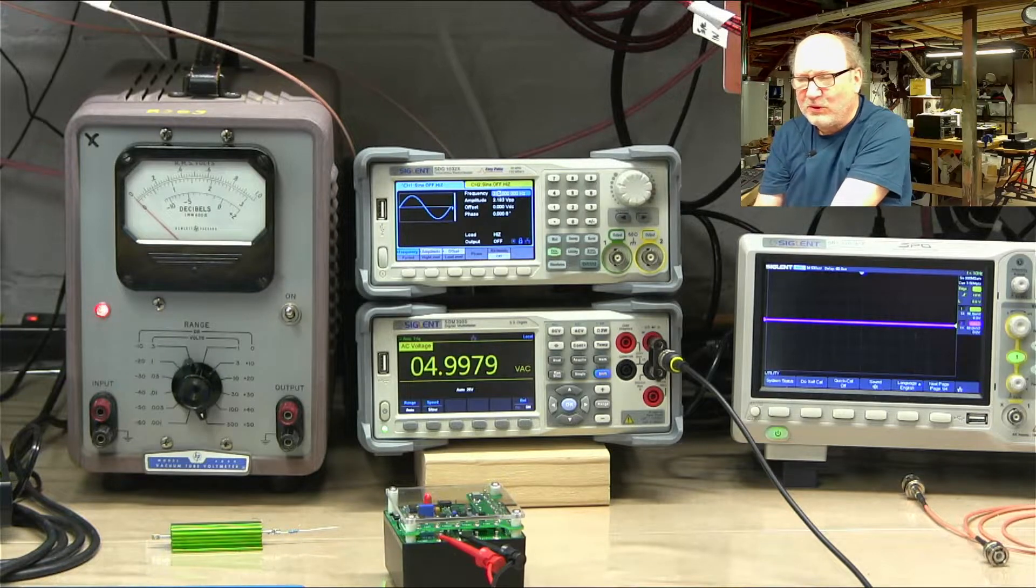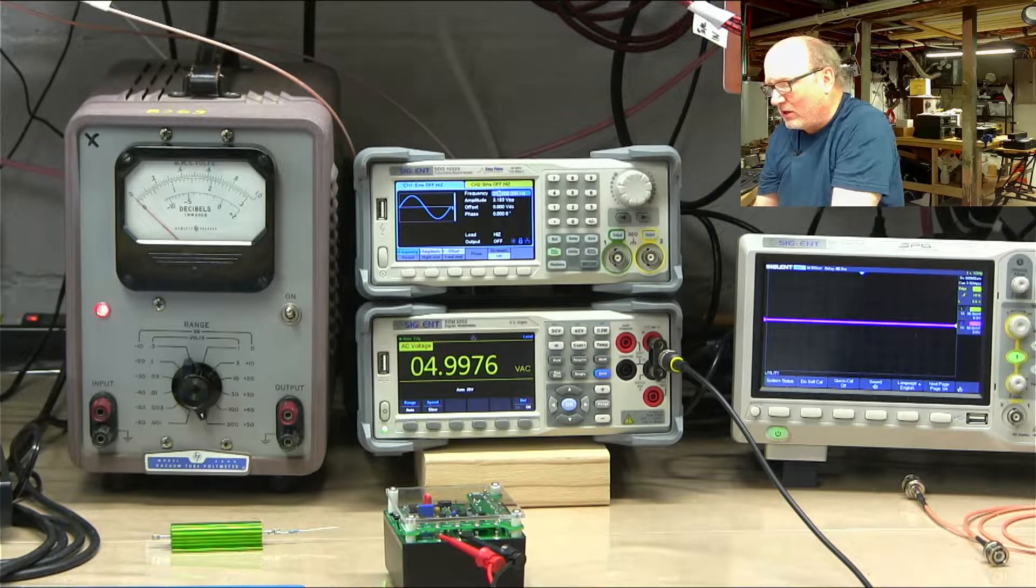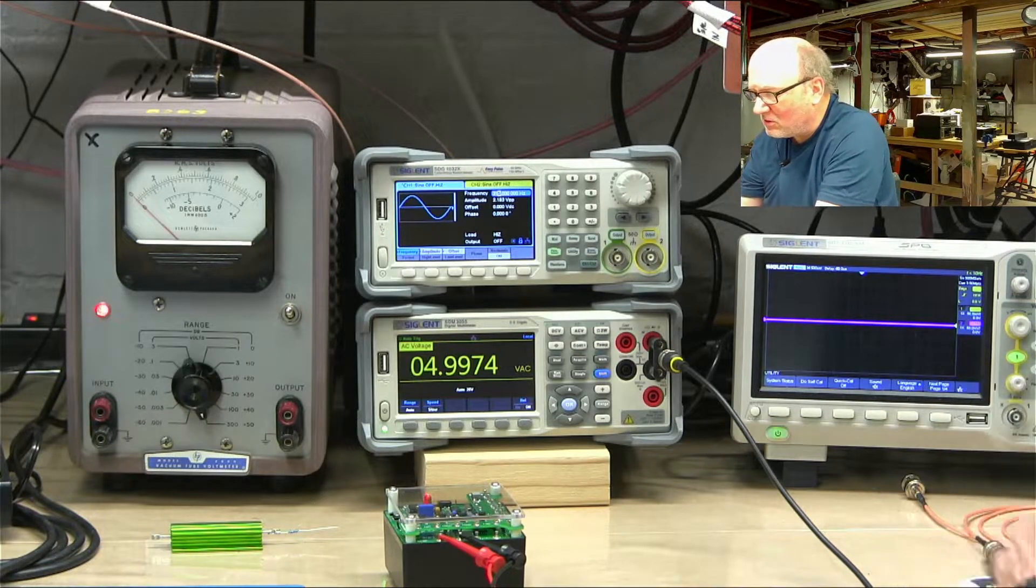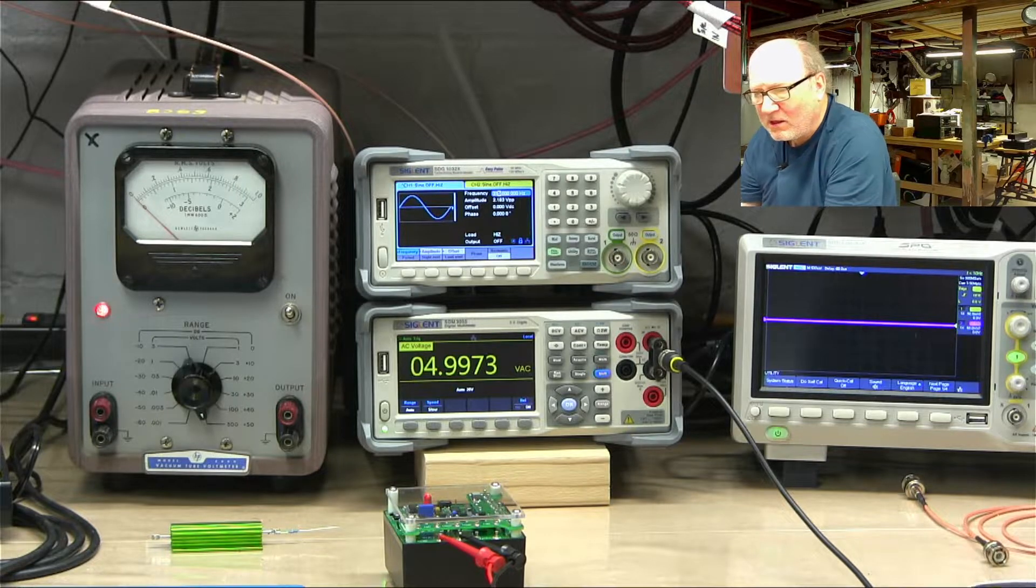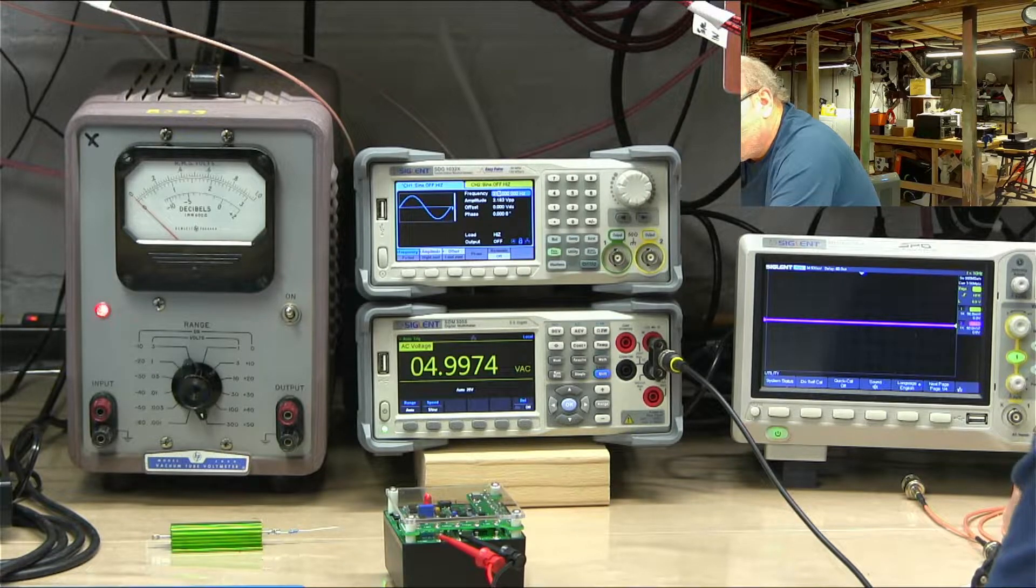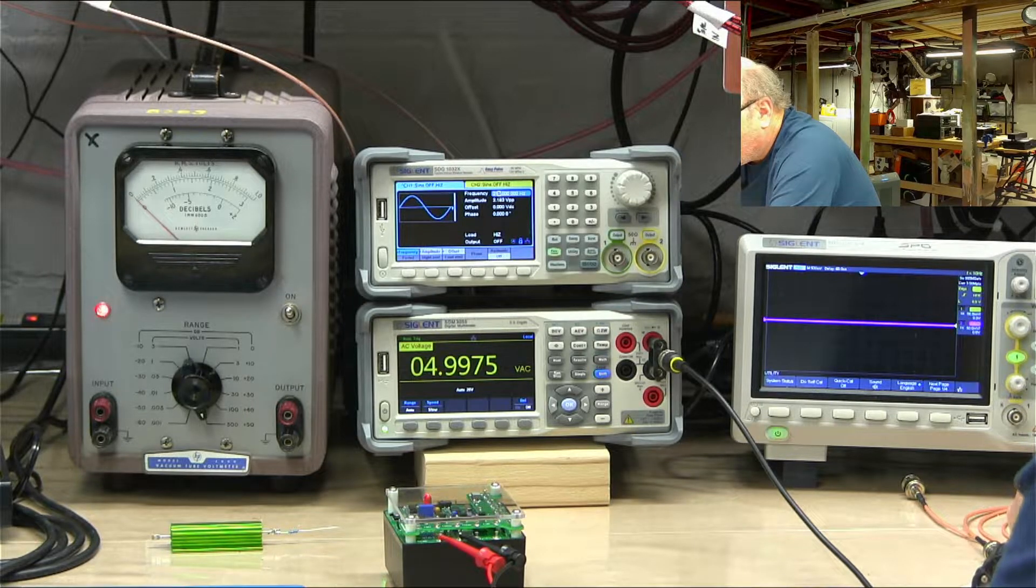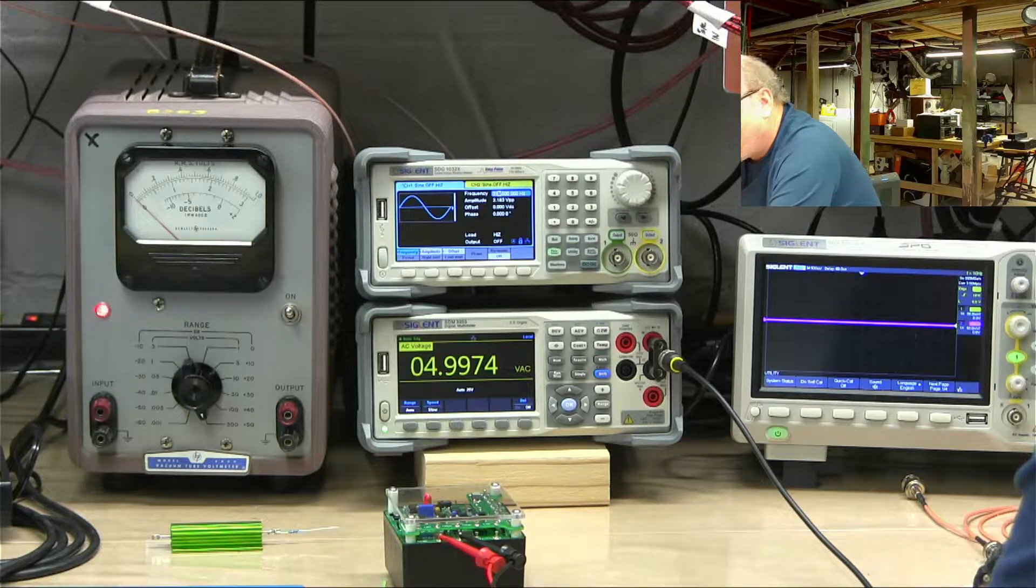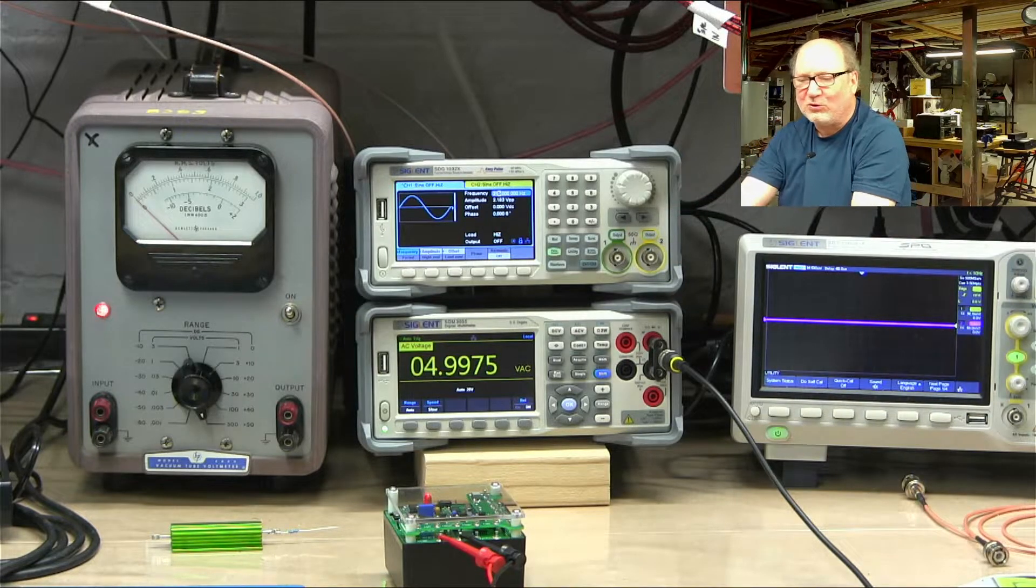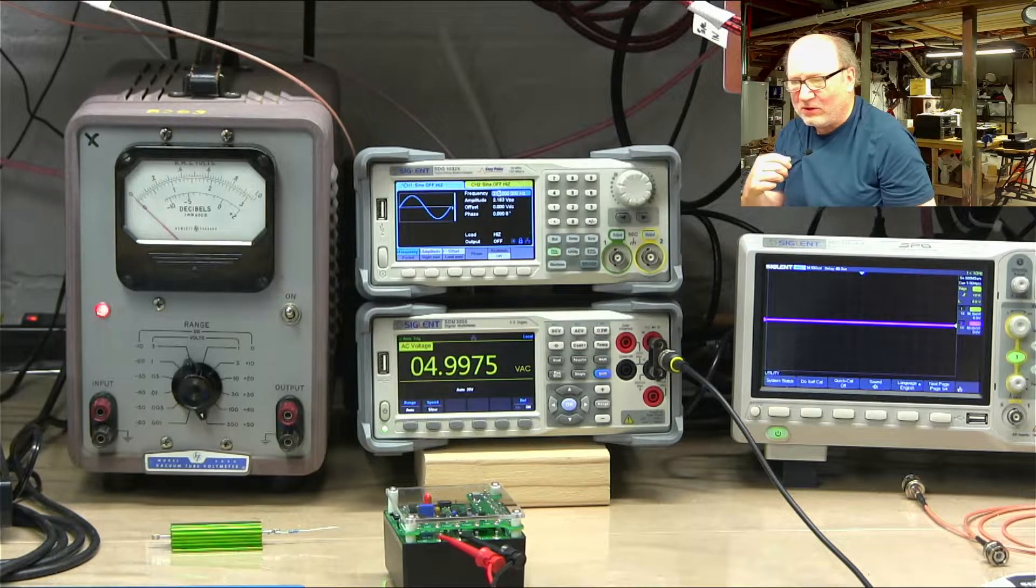So we'll go back to the AC volts. The standard is 4.999 volts and we're reading 4.9975, so we're reading roughly about 0.0015 off. The tolerance on the AC was 0.02, so the meter has to be plus minus 0.02, and we're well within 0.02.